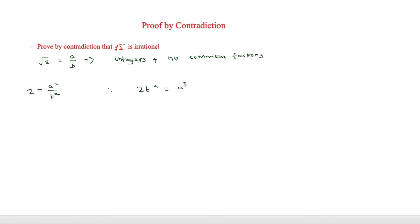Now this means that a² is a multiple of 2. And because a² is a multiple of 2, then a is also a multiple of 2.